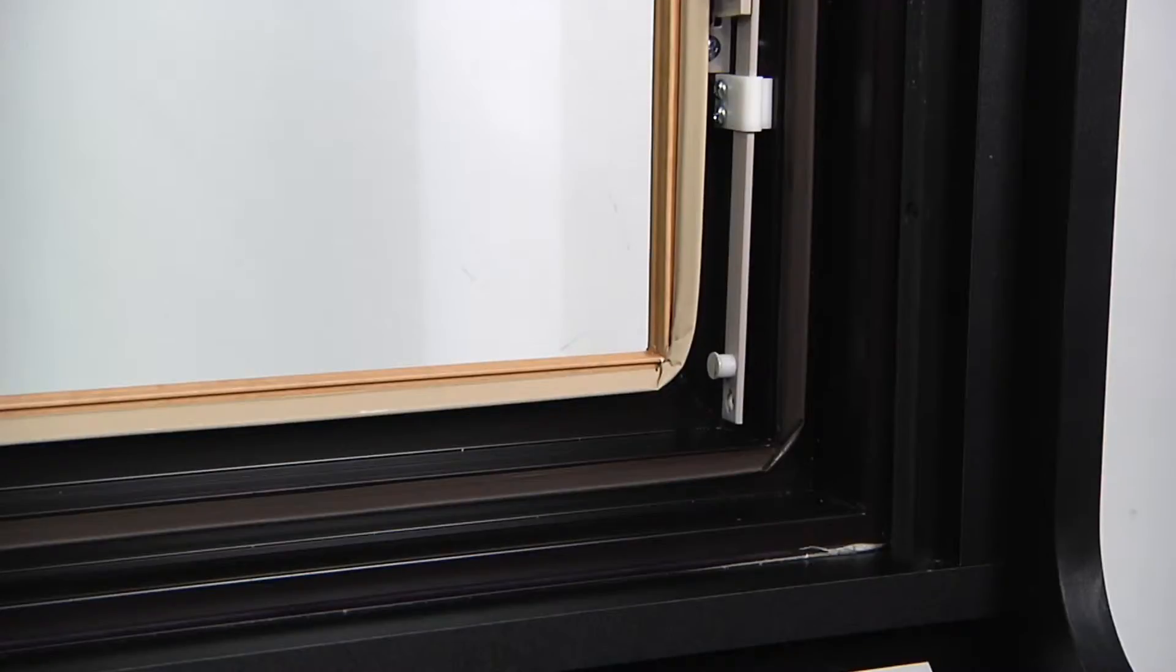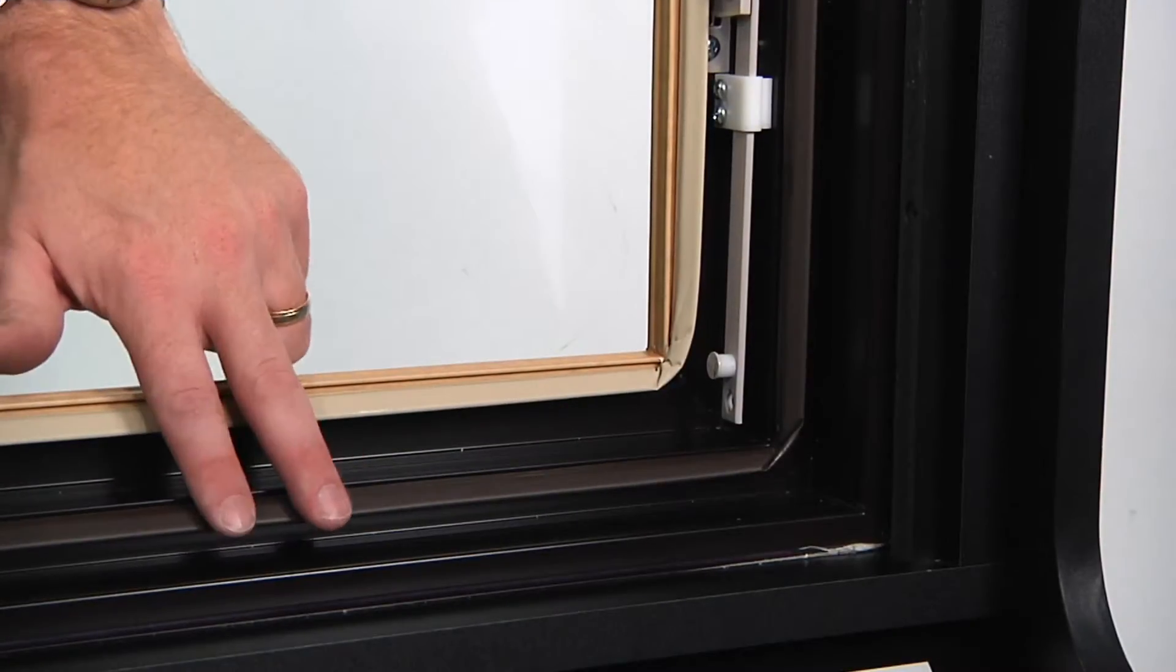Industry-leading Schlegel Q-Lon Premium Foam Seal Weather Stripping is used exclusively on the i-Series casement windows. Q-Lon has been used on two separate layers all the way around the perimeter of the sash and frame to create a double bank vault-like compression seal when the window is closed.